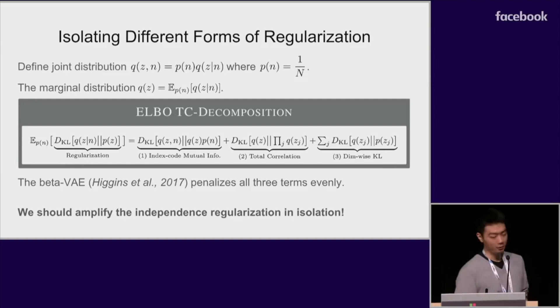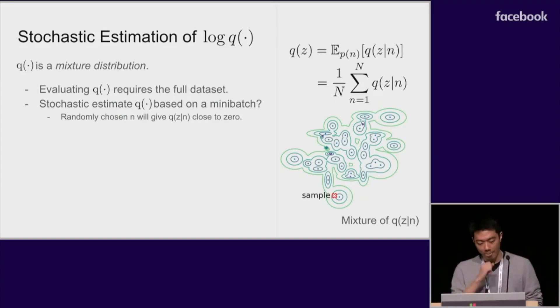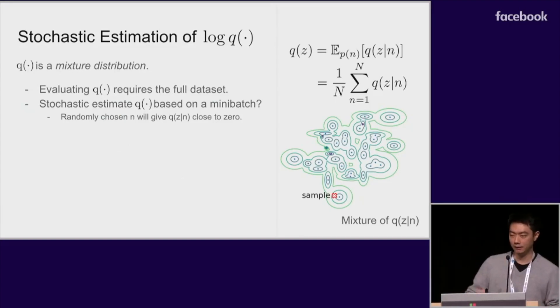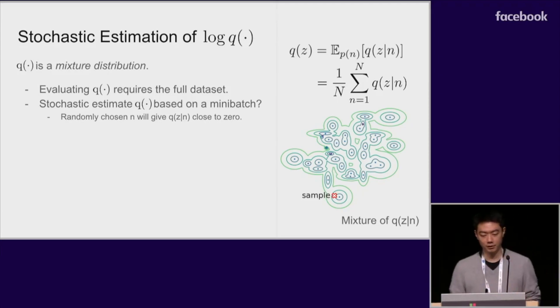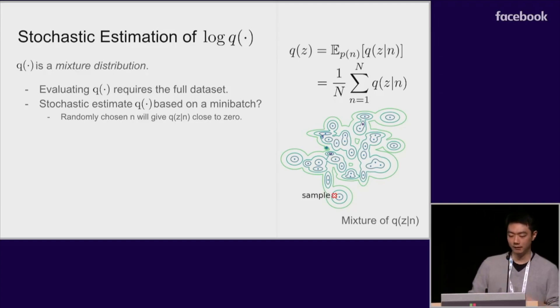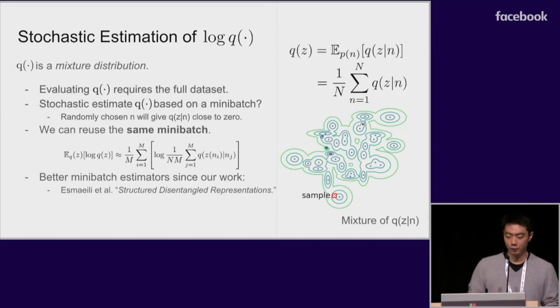To this end, we would like to be able to stochastically estimate all three terms in this decomposition during training. The main difficulty lies in evaluating the log density of q for any single sample z. This is difficult because q(z) is a mixture distribution defined on the full data set. If we try to naively estimate q based on a mini batch of samples, then most samples of n will end up underestimating q(z) because q(z|n) is close to zero. Instead, if we take the n that was used to sample that particular z, then we know that q(z|n) should be of a high value. So if we can use the same mini batch that we used to sample z, we should be able to get a more meaningful estimate of q.